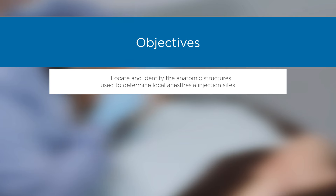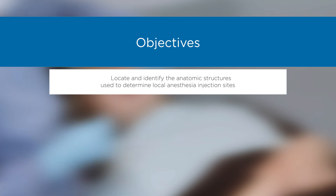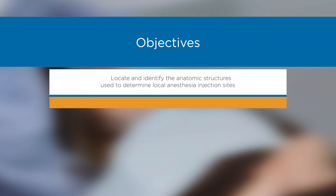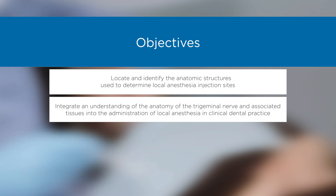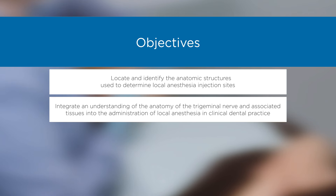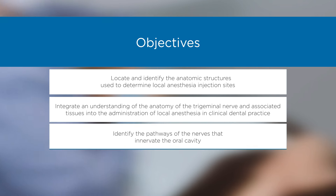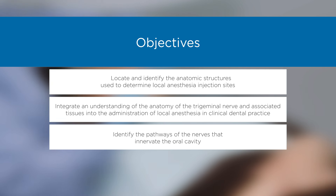Objectives: Locate and identify the anatomic structures used to determine local anesthesia injection sites. Integrate an understanding of the anatomy of the trigeminal nerve and associated tissues into the administration of local anesthesia in clinical dental practice. Identify the pathways of the nerves that innervate the oral cavity.